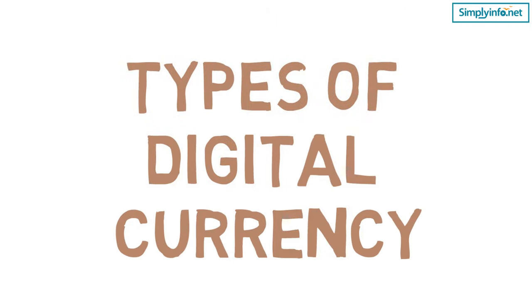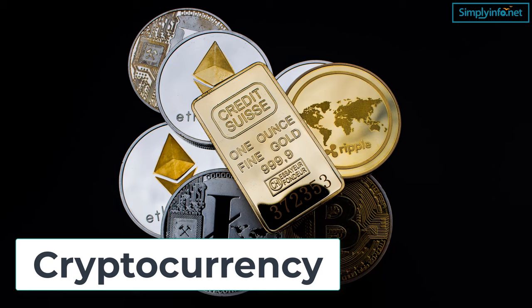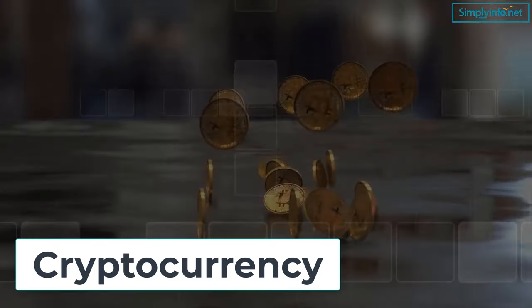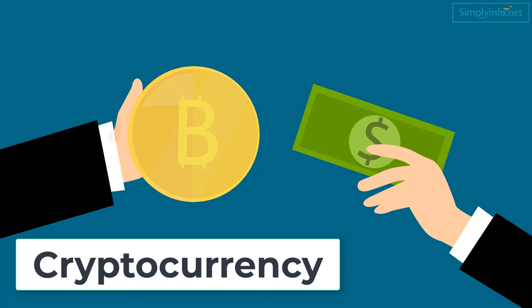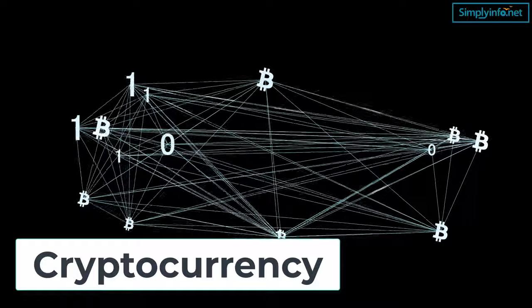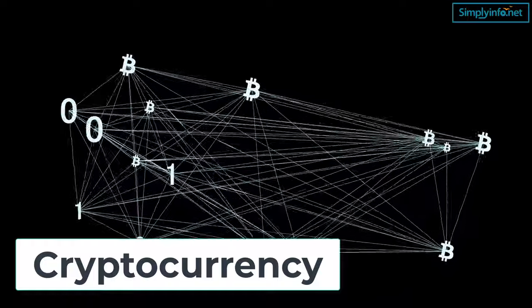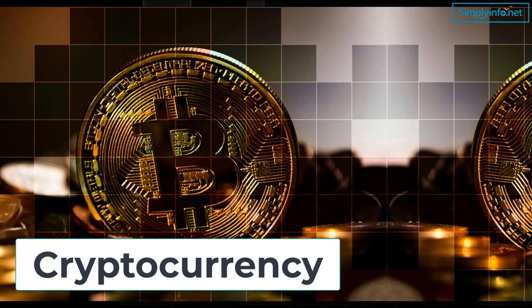Now let's look into the types of digital currency: Cryptocurrency, Virtual Currency, and Central Bank Digital Currency. Cryptocurrency is a form of payment that can be exchanged online for goods and services. Many companies have issued their own currencies, often called tokens, which can be traded specifically for the goods and services provided by that company. One needs to exchange real currency for the cryptocurrency to access the good or service. Cryptocurrency works using a technology called blockchain. Blockchain is a decentralized technology spread across many computers that manages and records transactions, and it stores data in blocks that are then chained together.